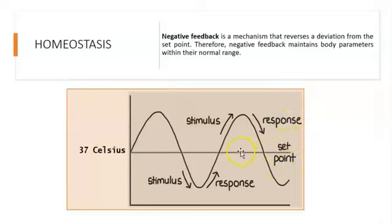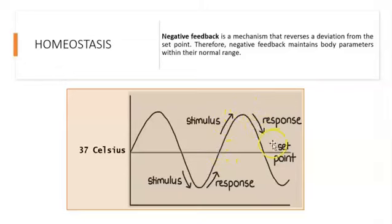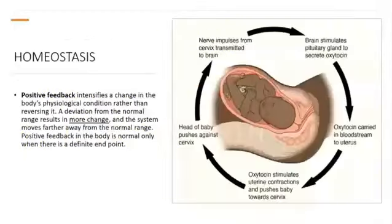Anything that deviates from the balance is going to be considered not normal. So if the temperature goes up, your body will bring the temperature down to homeostasis. If the temperature is down, your body will work to bring it up to the normal set point — in this case, 37 degrees. Since the body does the opposite of the deviation, this is called negative feedback.